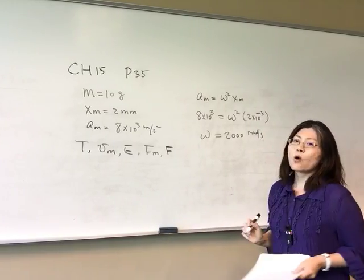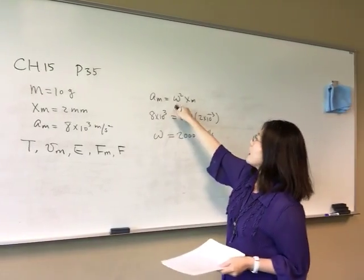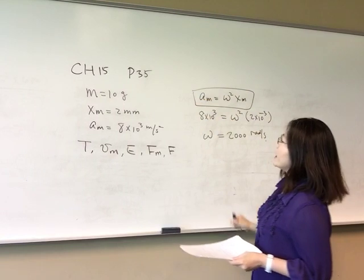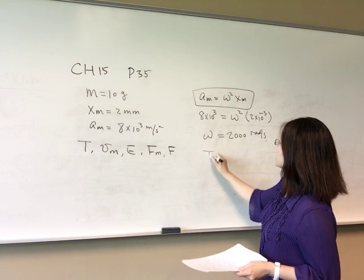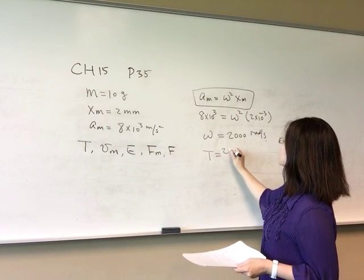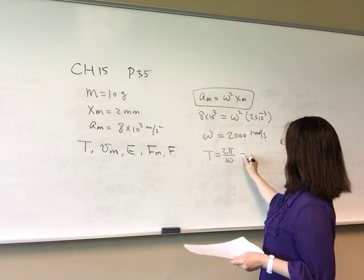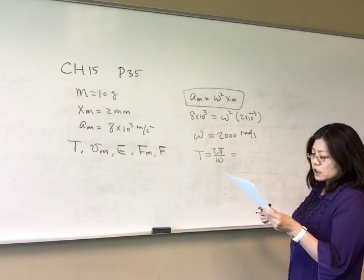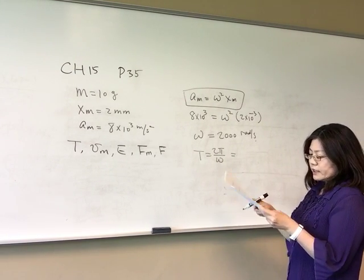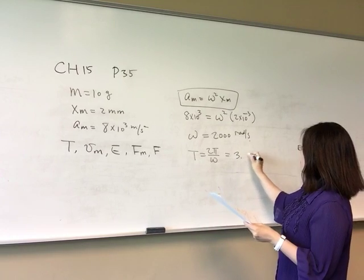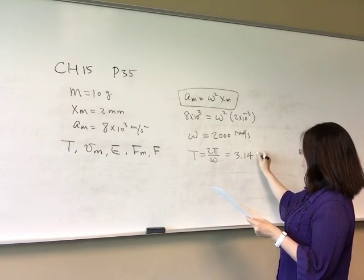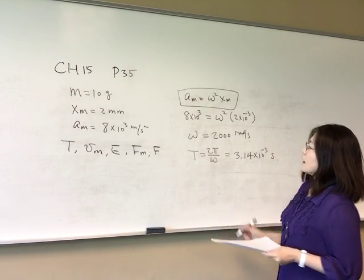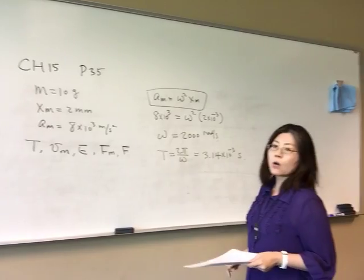Once we have omega, we can calculate period T because T equals 2 pi over omega. Plugging in omega equals 2000, we get T equal to 3.14 times 10 to the negative 3 seconds.